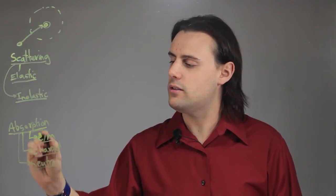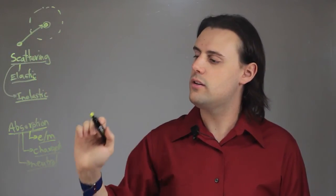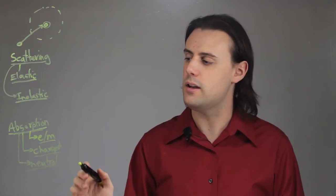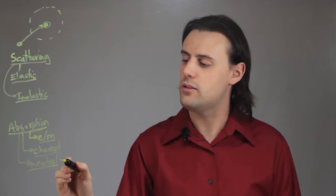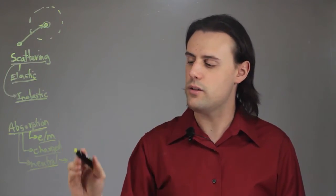And each of these types of processes involve the neutron being absorbed into the nucleus, and then some other type of particle being emitted from the nucleus. So, if it's neutral, that means another neutron has been emitted from the nucleus.